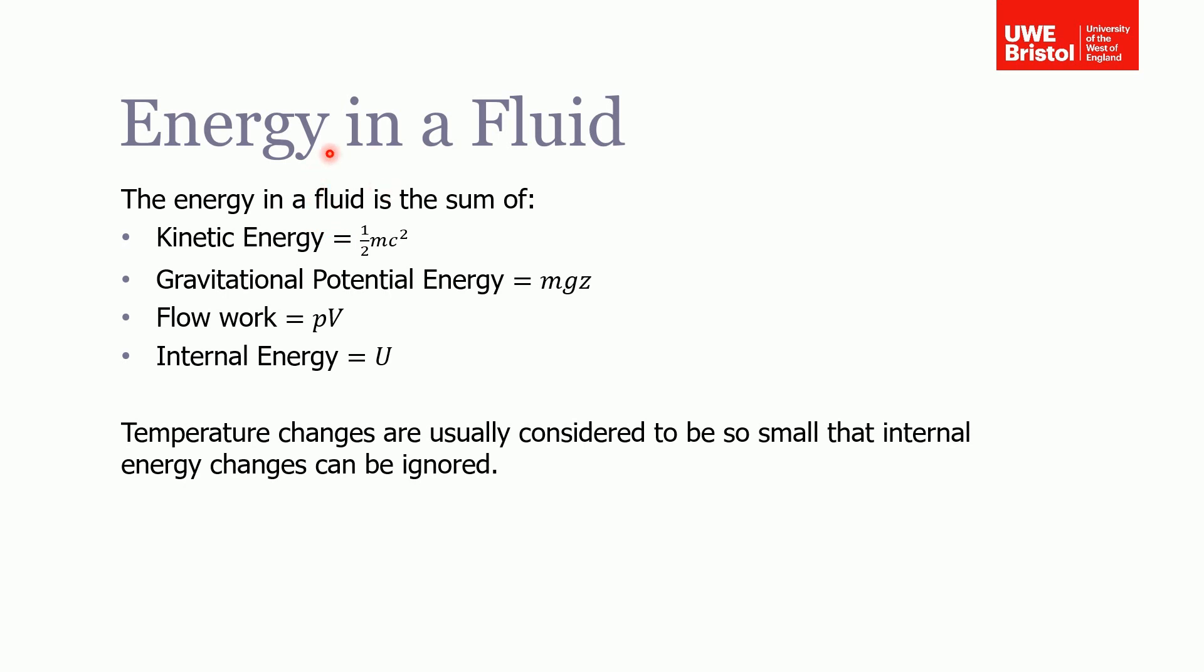If we consider the energy that's in a fluid, there's four main sources, four different types of energy. There's kinetic energy, and the kinetic energy is equal to half mass times velocity squared, half mvc squared. We also have the gravitational potential energy, so that's the mass, in this case of your fluid, times the gravitational pull times the height.